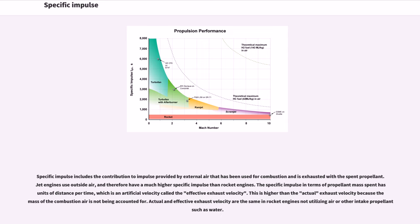Specific impulse includes the contribution to impulse provided by external air that has been used for combustion and is exhausted with the spent propellant. Jet engines use outside air and therefore have a much higher specific impulse than rocket engines. The specific impulse in terms of propellant mass spent has units of distance per time, which is an artificial velocity called the effective exhaust velocity. This is higher than the actual exhaust velocity because the mass of the combustion air is not being accounted for. Actual and effective exhaust velocity are the same in rocket engines not utilizing air or other intake propellant such as water.